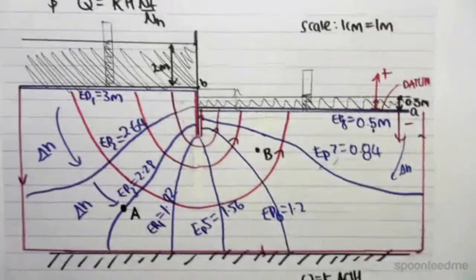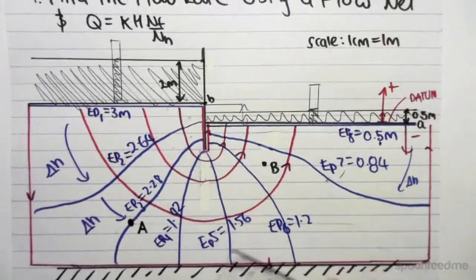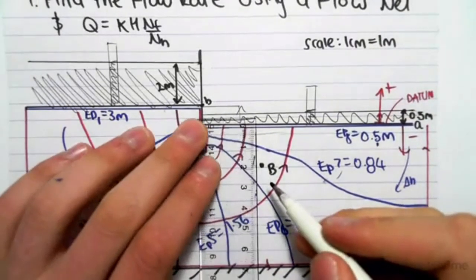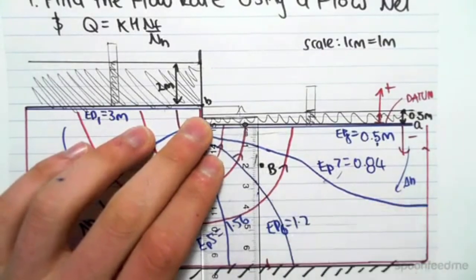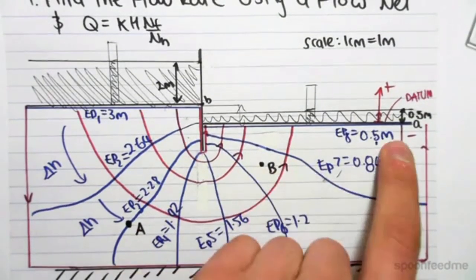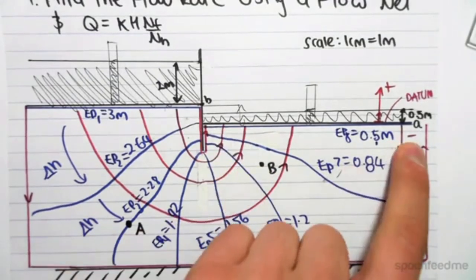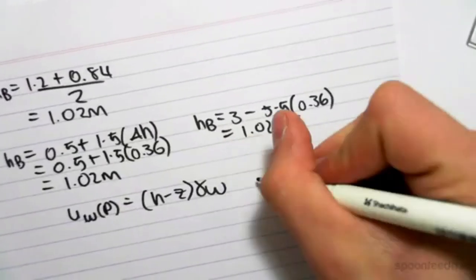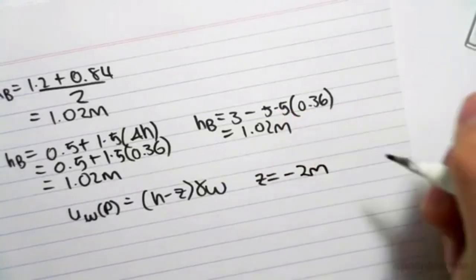You guys will remember where we find Z is we just scale it off our diagram. From the datum, point B is around 2 centimeters below the surface, which in our scale is 1 meter. And once again, because we're going below our datum, it's negative. So Z will be negative 2 meters.